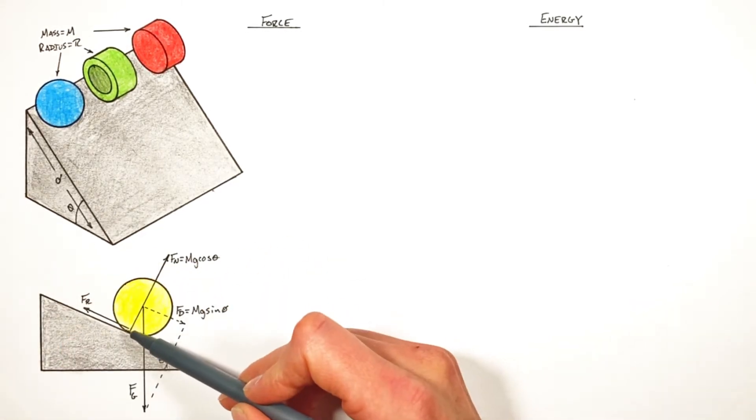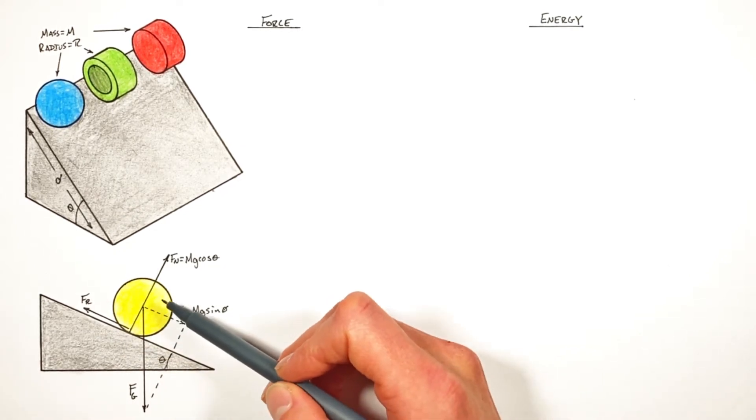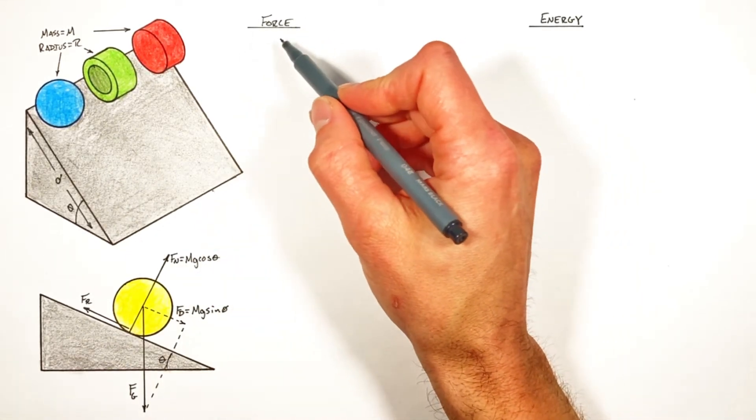And that friction force is going to be acting up the hill, effectively slowing down this object. So now using our free body diagram, we can start to analyze what's happening using force.